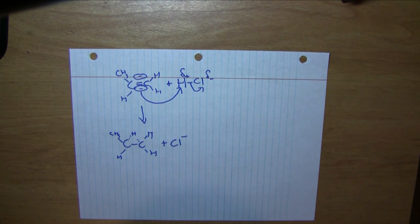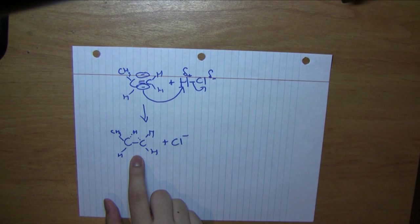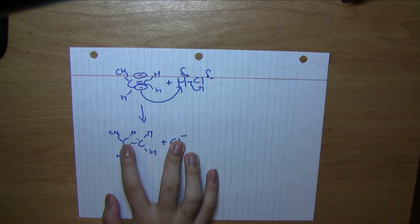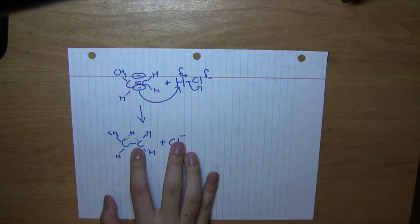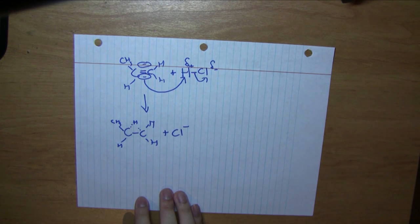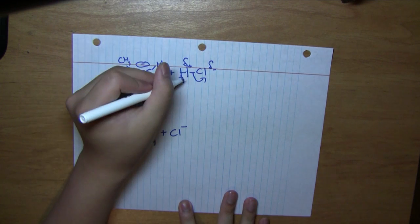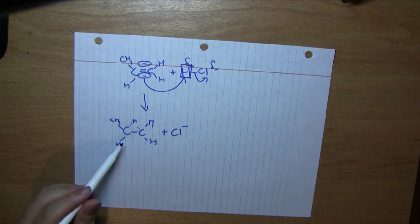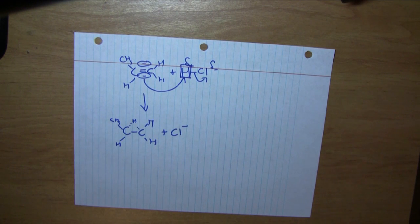Now here we encounter a problem. This intermediate is obviously very unstable. Therefore, we must have the proton attack one of these carbons, but we don't know which one. We have to use Markovnikov's Rule, which states that the positive part of the reactant, in this case the H, would bond to the carbon which forms the more stable carbocation intermediate. So let's test it out.